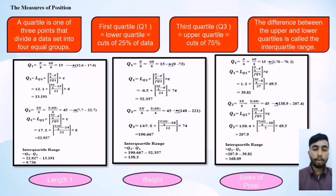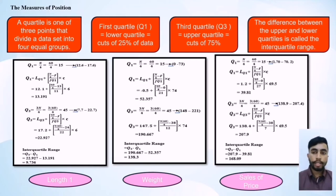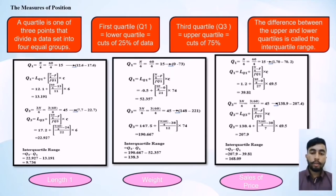The second part of numerical descriptive measurement is the measure of position, which includes quartiles and interquartile range. A quartile is one of the three points that divides a dataset into four equal groups. Q1 equals the lower quartile, cutting off 25% of the data. Q3 equals the upper quartile, cutting off 75%. The difference between the upper and lower quartiles is called the interquartile range. For length: Q1 is 13.191, Q3 is 22.297, and the interquartile range is 9.736. For weight: Q1 is 52.357, Q3 is 119.667, and the interquartile range is 138.3. For sales price: Q1 is 39.81, Q3 is 207.9, and the interquartile range is 168.09.